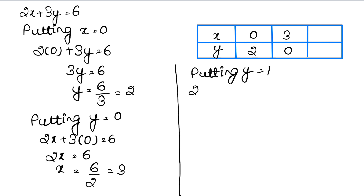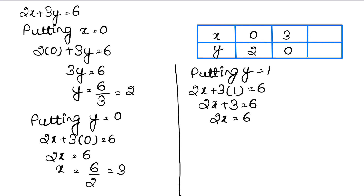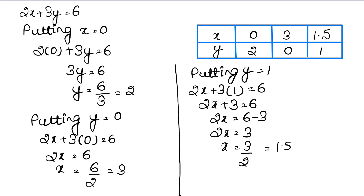Now putting y equals to 1: we have 2x plus 3 into 1 equals to 6, so 2x plus 3 equals to 6, so 2x equals to 3, that is x equals to 3 upon 2, which is 1.5. So when y is 1, x is 1.5.